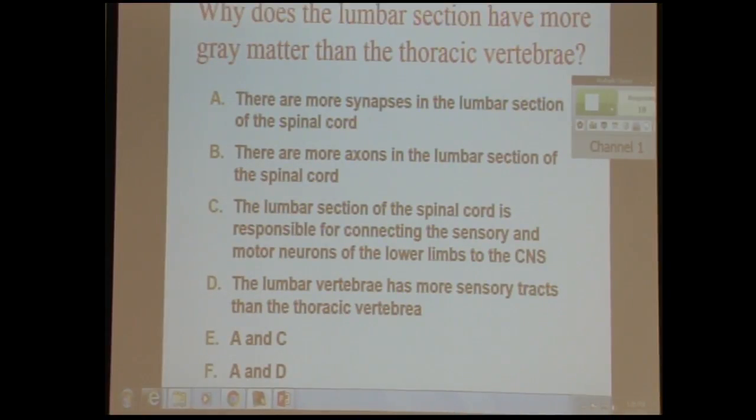The reason there's more synapses is because you've got all the information coming from your lower limbs and going to those legs that needs to be integrated there. Whereas higher up, you've just got the arms. But then you have all the white matter, which is carrying all the axons from everything below. So that's why as you go up, you have less and less gray and more and more white.